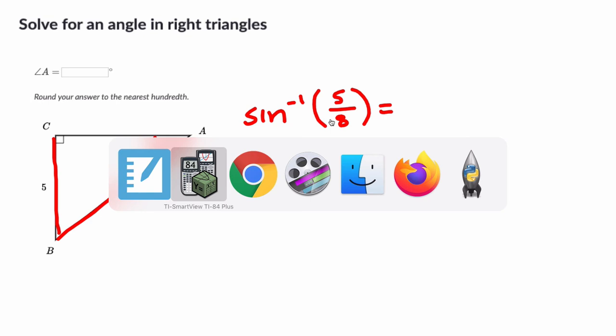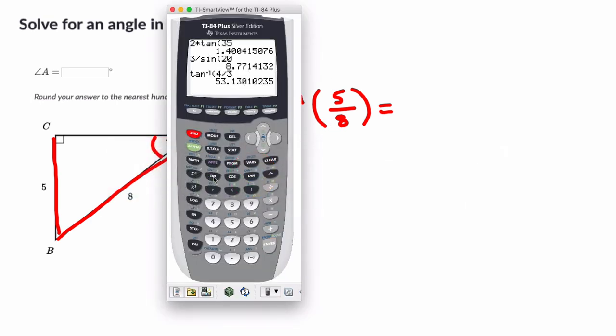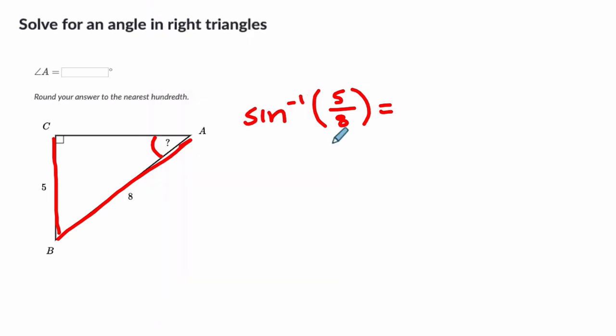So on the calculator, we just go to second, sine, and if you're not getting the right angles here, press mode and make sure you're in degree mode and not radian. So the sine, the inverse sine of five eighths is 38.68 to the nearest hundredth. That's saying that the angle, 38.68 degrees has a sine of five eighths, right? So that's the value of angle A here to nearest hundredth.